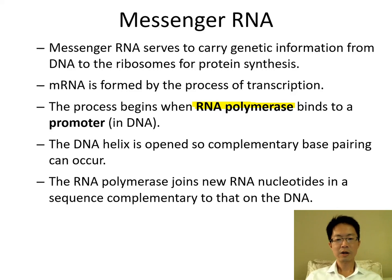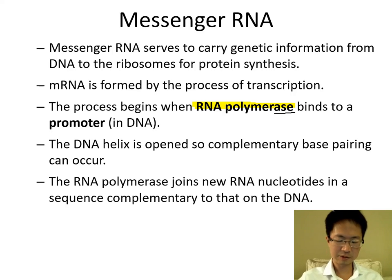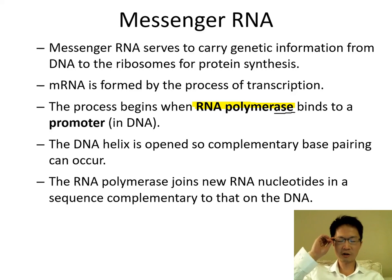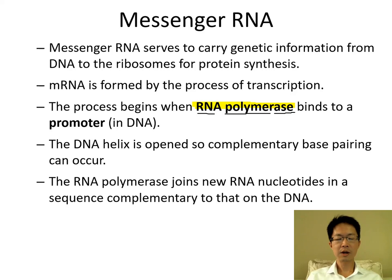The suffix '-ase' means it is an enzyme. What is the function of this enzyme? The function of this enzyme is to make RNA polymer. What is RNA polymer? It is messenger RNA.